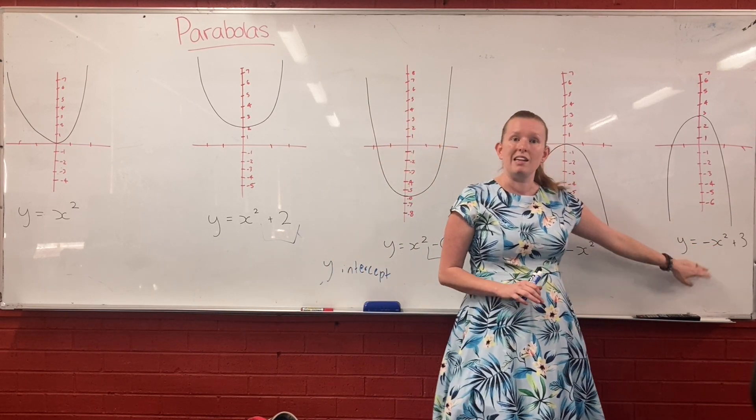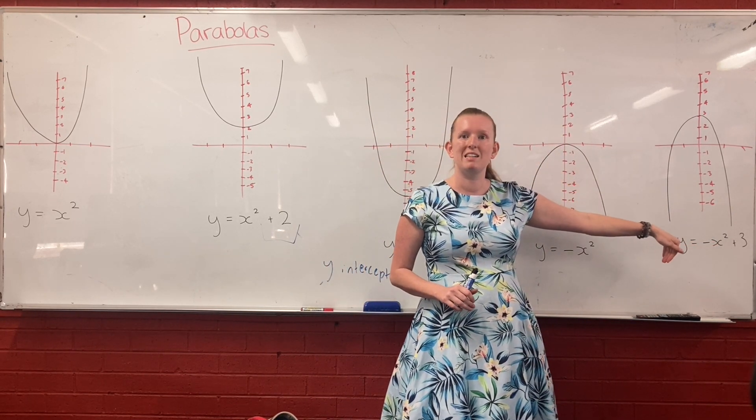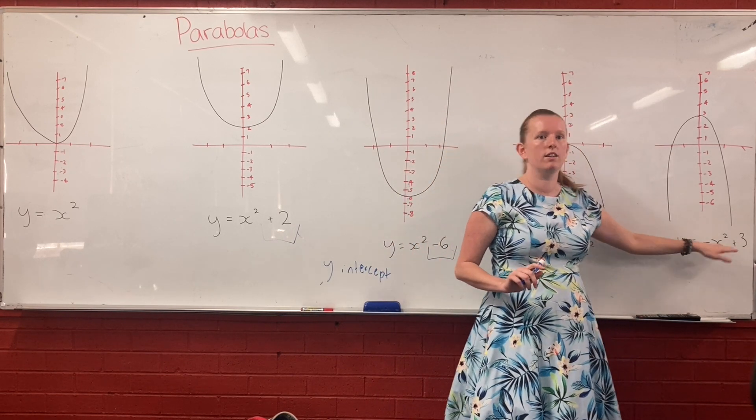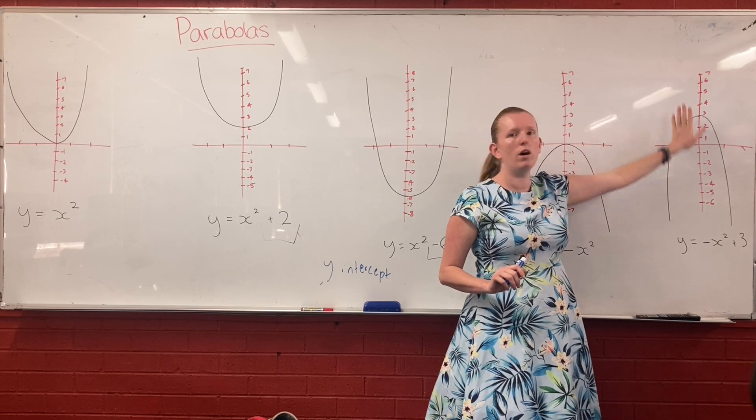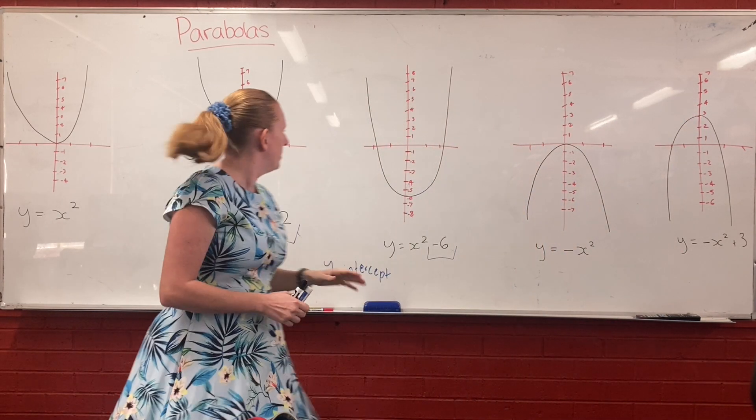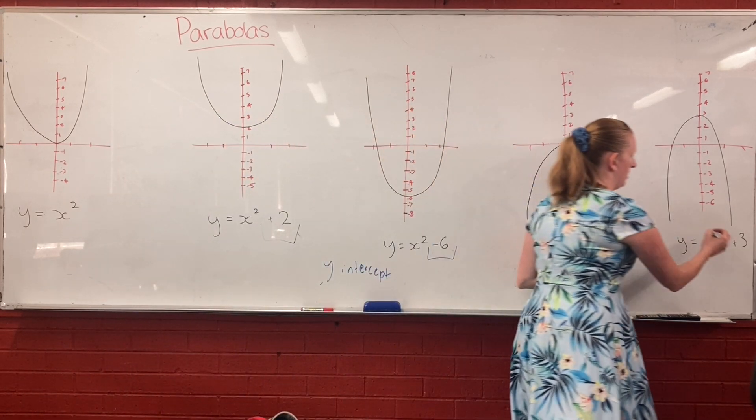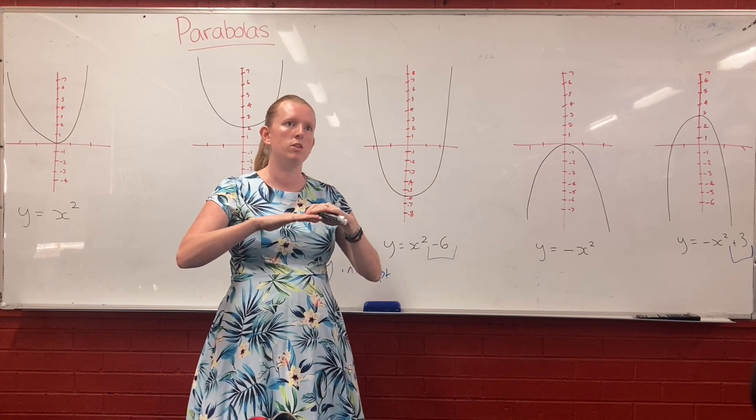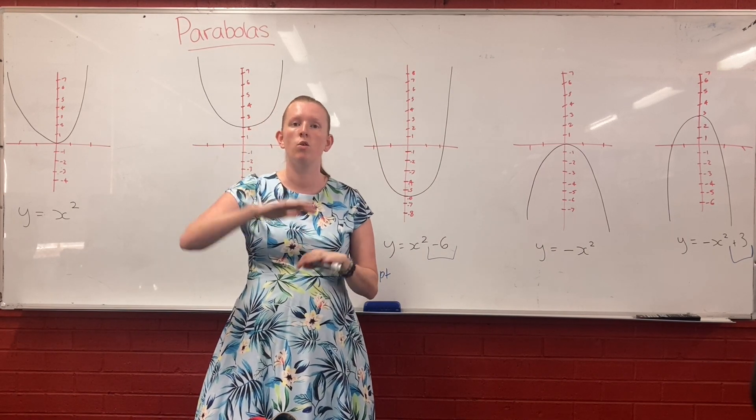This one over here, it is negative because it's been flipped upside down and it's been moved. So it's got a plus 3 on the end, so it means it's touching our y-axis at positive 3. So the number that's on the end tells you how your parabola has been moved up or moved down.